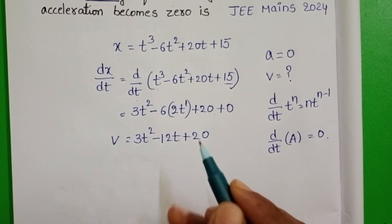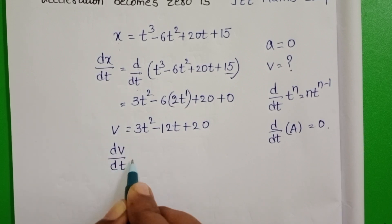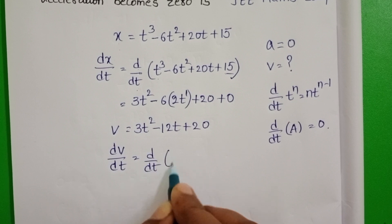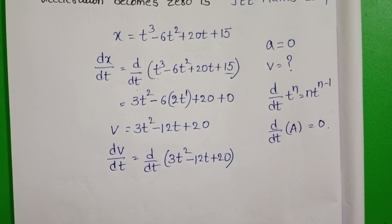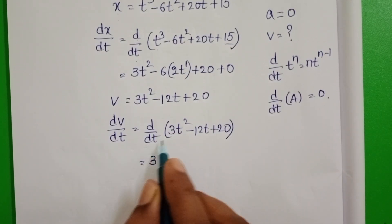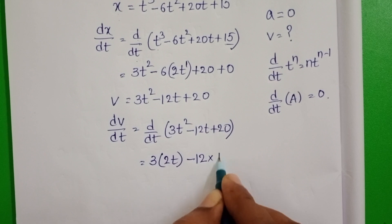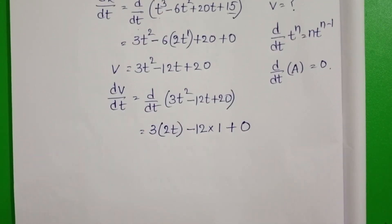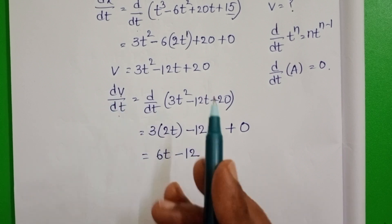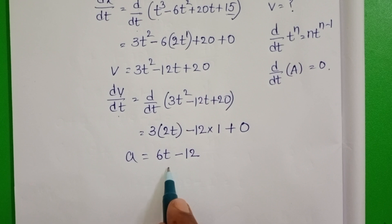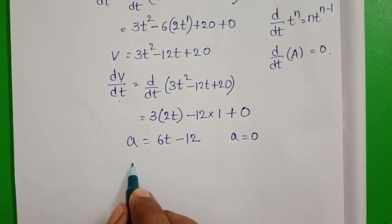Now once again differentiate velocity with respect to time. dv/dt equals d/dt of 3t squared minus 12t plus 20. Using the same formula: 3 times 2t minus 12 times 1, and differentiation of constant is zero. This gives 6t minus 12. The rate of change of velocity is acceleration. So this is the acceleration of the particle.